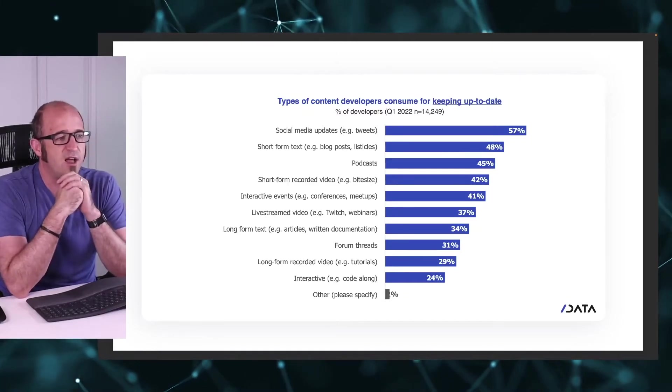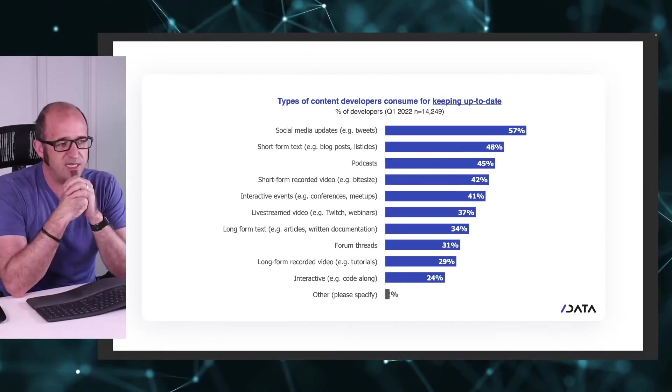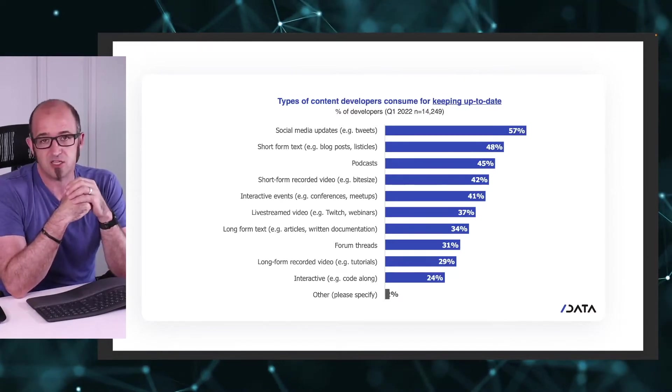But when we take a look at the data here, social media updates is by far the most popular one. I'm not particularly surprised by this because social media is at its core an interrupt-driven mechanism. When you're on Twitter, Facebook, TikTok, Instagram, or LinkedIn, you're kind of looking through things and content is flowing past. When it grabs your attention, when it interests you, when it excites you, you stop and look.